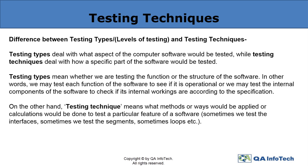While on one hand, testing types essentially refer to testing a function of the software for its operational ability or testing the structure to ensure the software's internal workings are according to the given specification. On the other hand, testing technique refers to the methodologies applied or calculations made to test a particular feature of the software, be it the interfaces, segments, loops, etc.